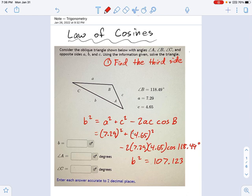I'm going to get something like 107.123. I'm not sure if that's exactly correct, but that's awfully close. And if I square root that, I get 10.35. There's my answer for side b.